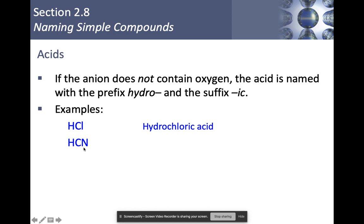Next, we have HCN. CN is cyanide. So this would become hydrocyanic acid. Next, we've got H2S. I have hydro, and then S is going to be considered sulfuric acid. So hydrosulfuric acid is the way that would be written if it was in acid form.